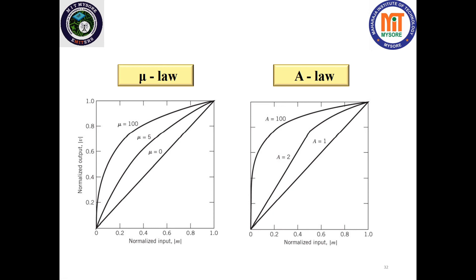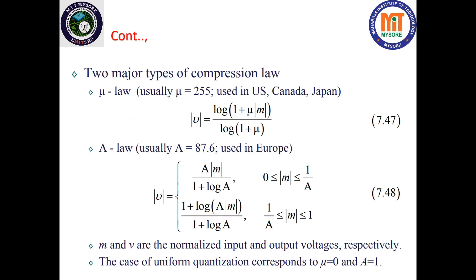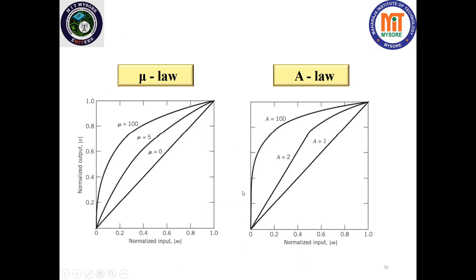A similar circuit, which is the inverse of the compressor — called the expander — is used at the receiver to get back the original signal. These are the equations governing the two characteristics: the mu-law and the A-law curves. That's all about the companding concept. In the next session we will understand delta modulation. Thank you.